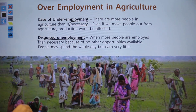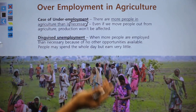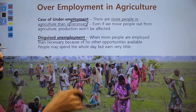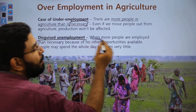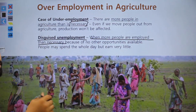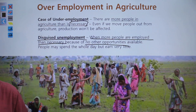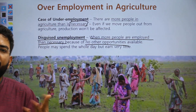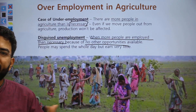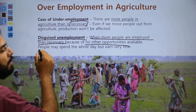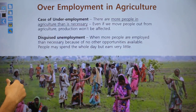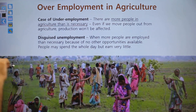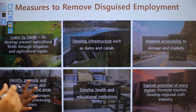Disguised unemployment is a situation where people appear employed, but if they lost their job, production would not suffer. When more people are employed than necessary because they have no other opportunity, they do not get a fair share of income since their importance to the sector is low. They spend the whole day but get very little returns. Disguised unemployment is the biggest employment problem in agriculture.